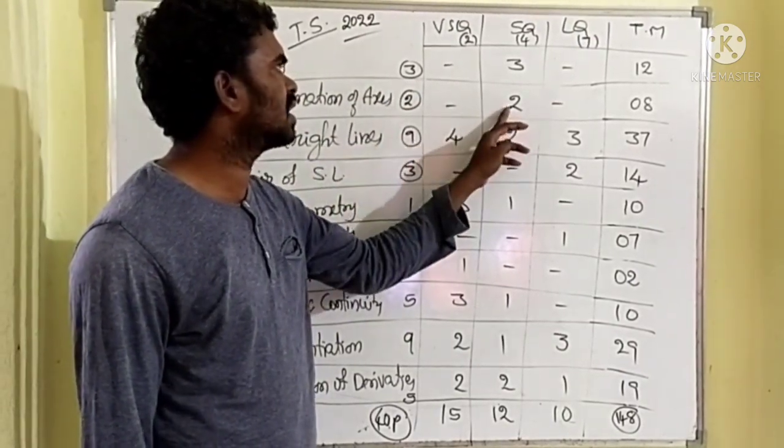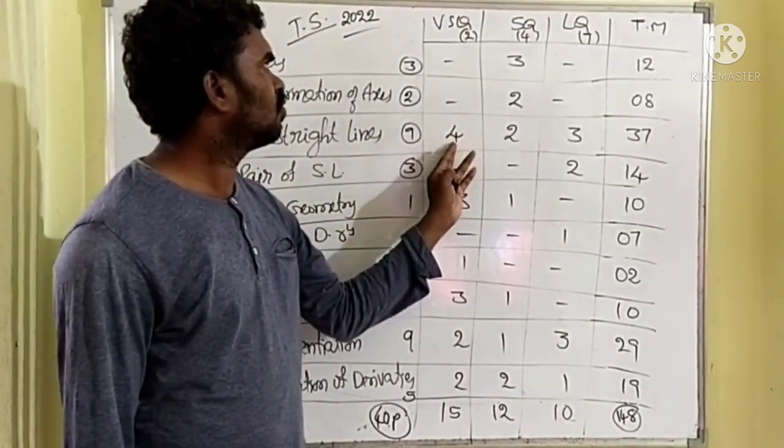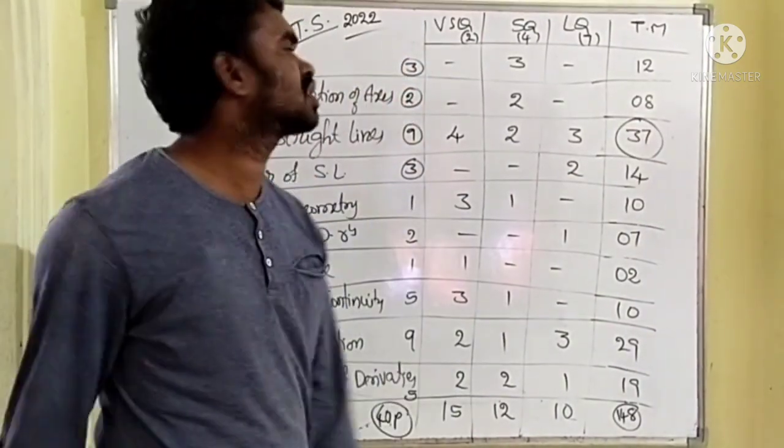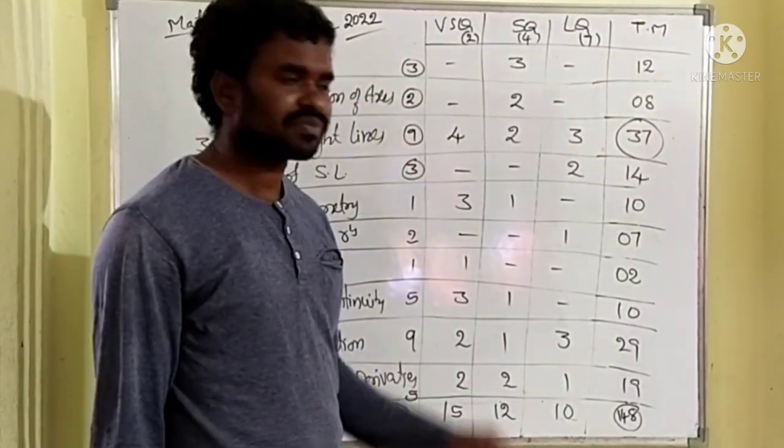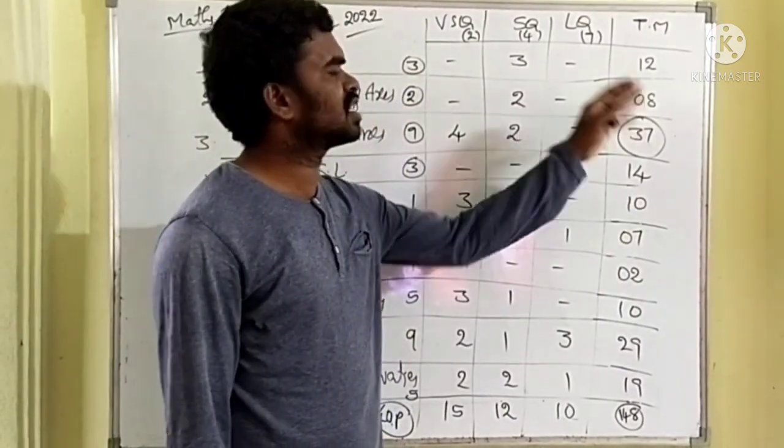Transformation of axes in our videos, 2 parts only. We can do 2 parts, we can get 2 four marks position, 8 marks. Similarly, straight lines - 4, 2, 3, 37 marks. Only from this chapter, we can get 37 marks. 9 parts are there. If you practice this only straight lines perfectly, we can pass very easily.